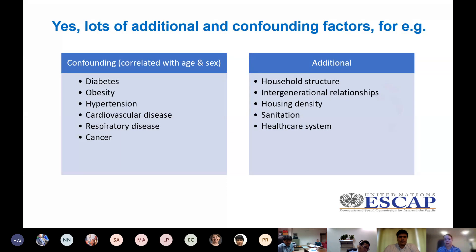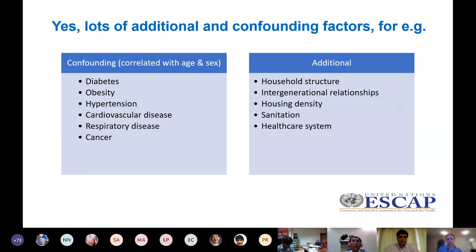However, age and sex is easily available. Even if we know that age is correlated with other conditions and may not be the direct cause, if we know the age we can make certain assumptions. We don't necessarily need data on all confounding conditions — it's much harder to get data on the prevalence of obesity, but we can very easily get data on how many older people there are in the population.